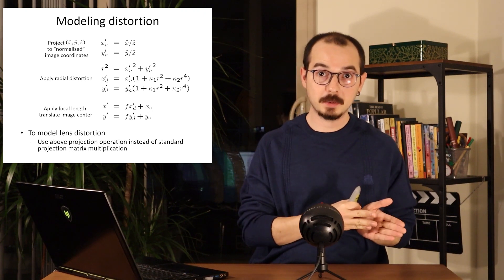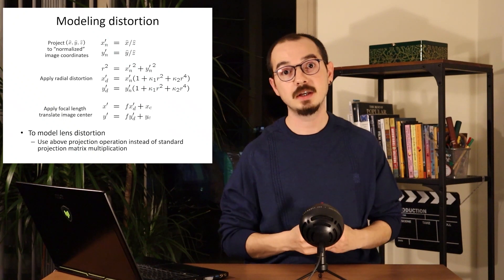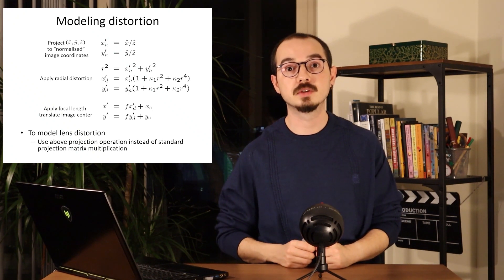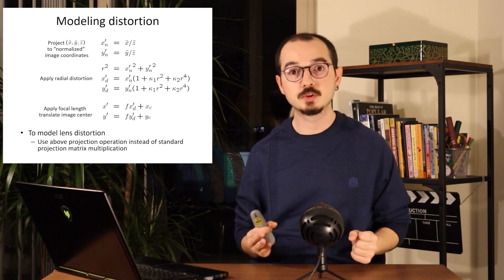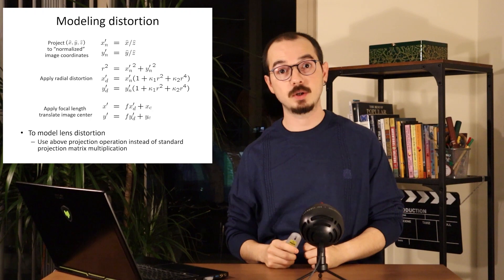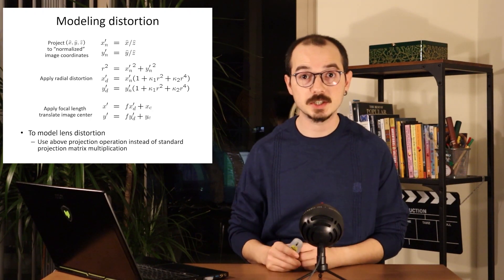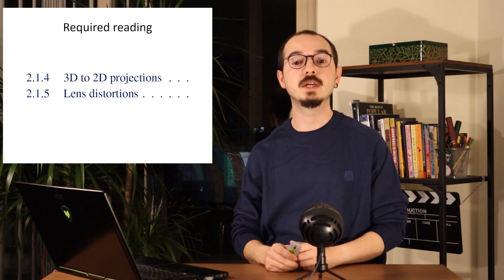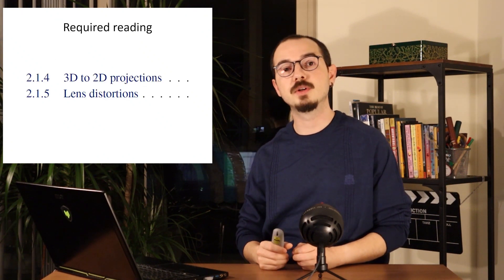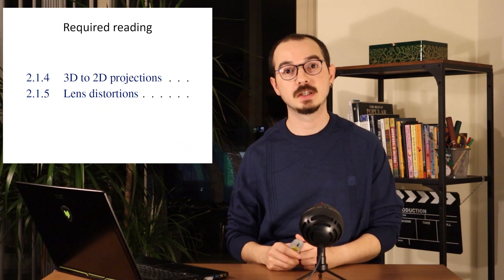Estimating the intrinsic parameters and estimating the extrinsic parameters are called camera calibration, and it is an important part of doing computer vision — for example, when trying to estimate the 3D structure of a scene using multiple cameras. We will not go into the details of camera calibration in this lecture. The required reading for today are sections 2.1.4 and 5 on projections and lens distortions. Thank you very much for listening, and I will see you in our stereo lecture next time.